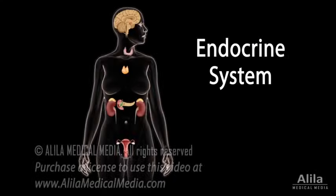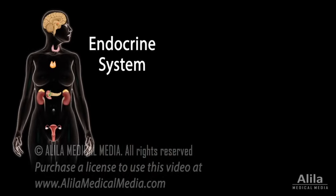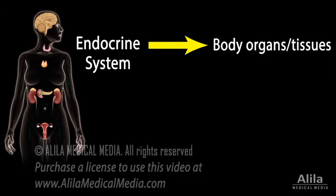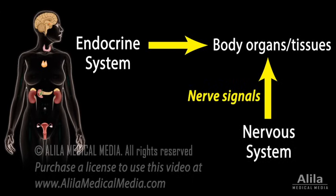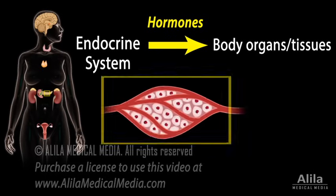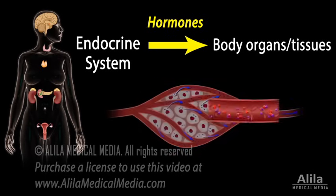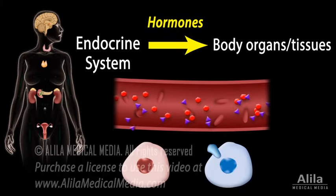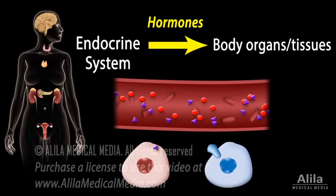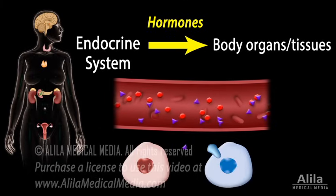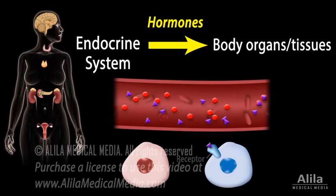The endocrine system is one of the two systems responsible for communication and integration between various body tissues, the other being the nervous system. Endocrine communication is achieved by means of chemical messengers called hormones. Hormones are produced in endocrine glands and secreted into the bloodstream to reach body tissues. A hormone can travel wherever the blood goes, but it can only affect cells that have receptors for it. These are called target cells.